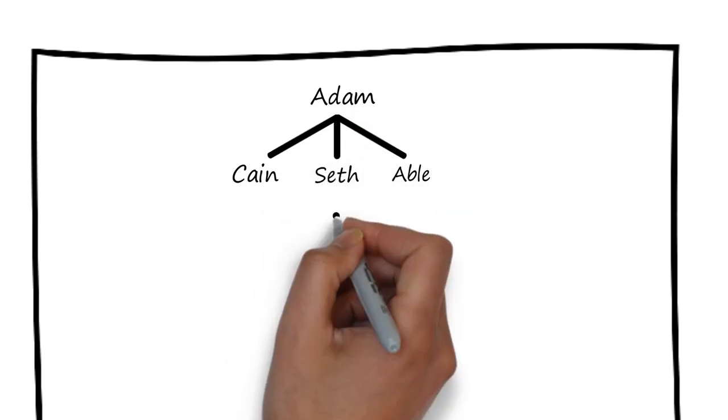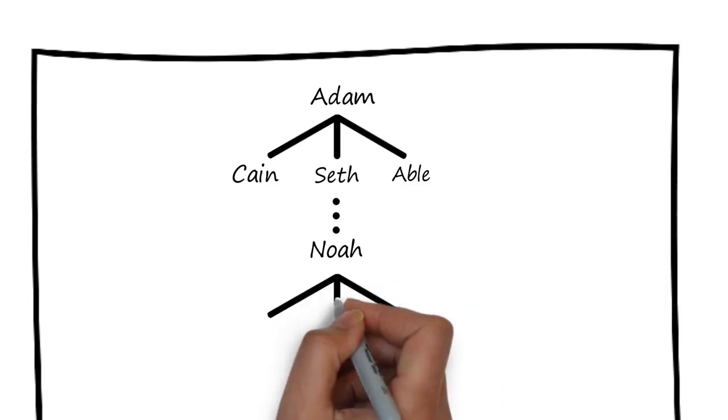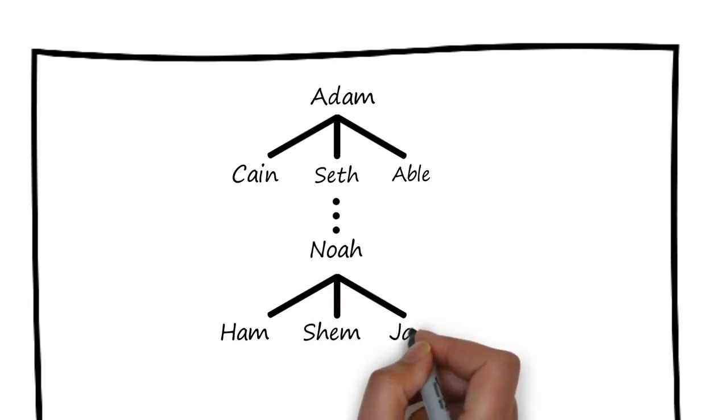Three dots indicate that there are several generations between Seth and our next main character, Noah. Noah had three sons: Ham, Shem, and Japheth.